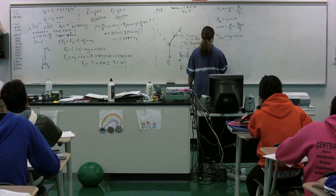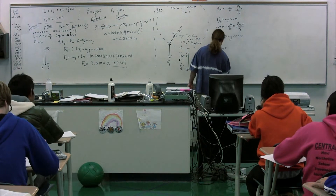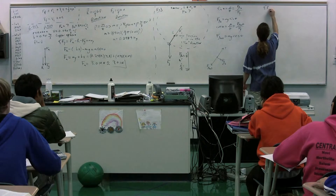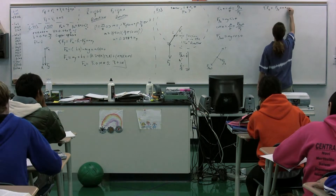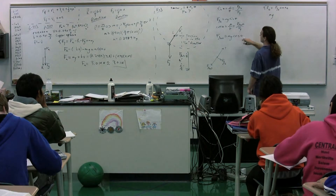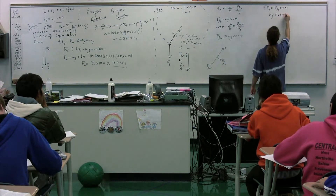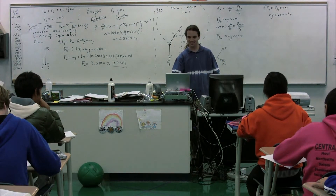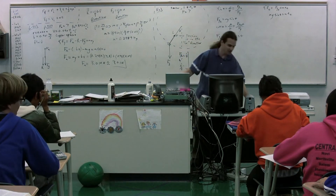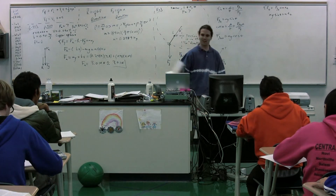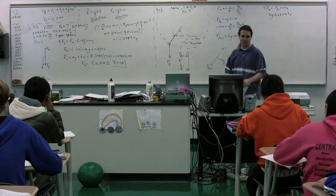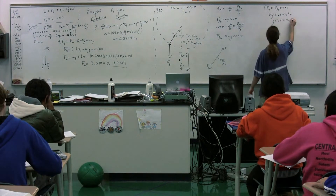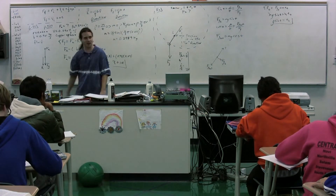We can redraw our free body diagram with tension, force of gravity tangential, and force of gravity outward. Summing the forces in the tangential direction, the force of gravity tangential equals mass times the tangential acceleration. Therefore mg sine theta equals m times tangential acceleration. Mass cancels from both sides, giving us g times sine of theta equals the tangential acceleration.